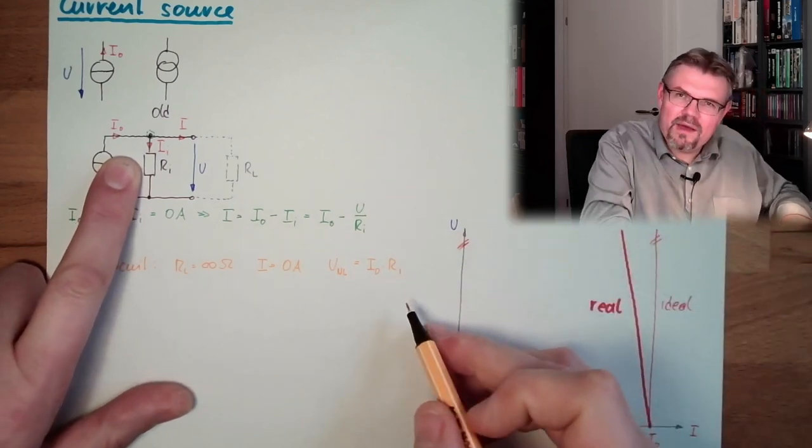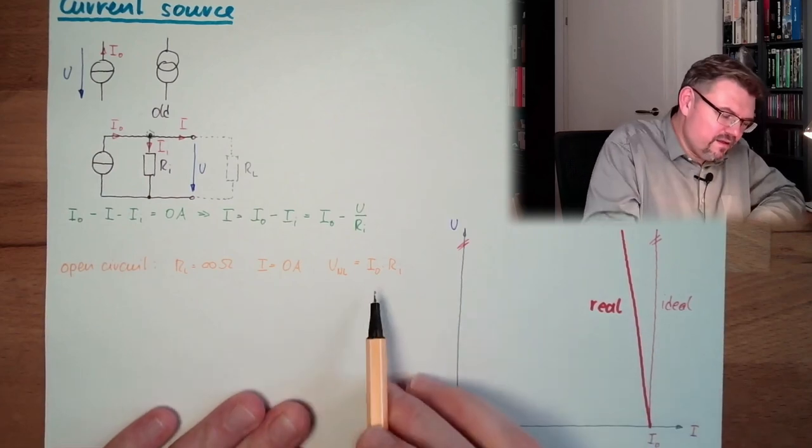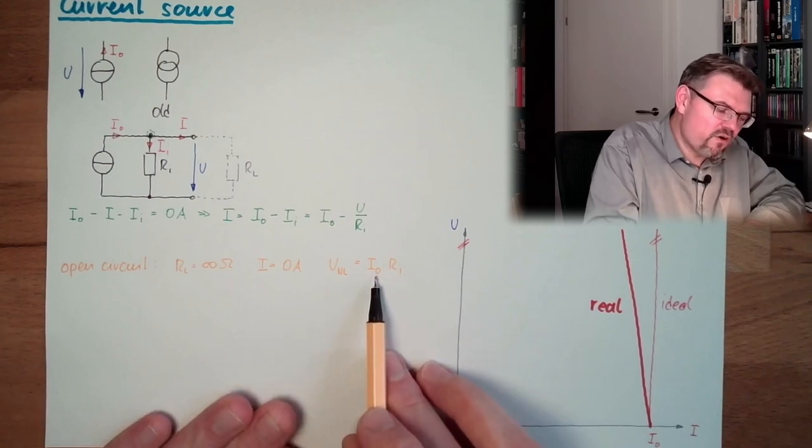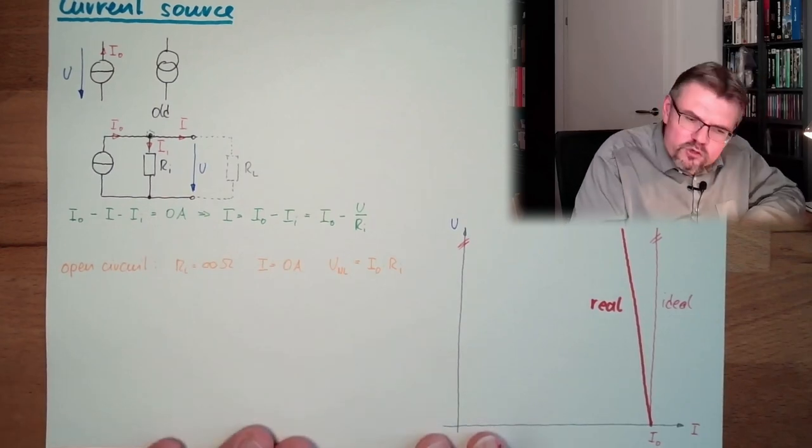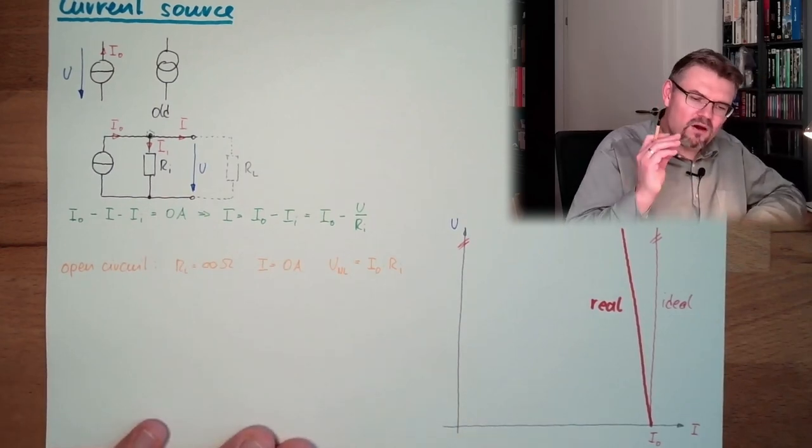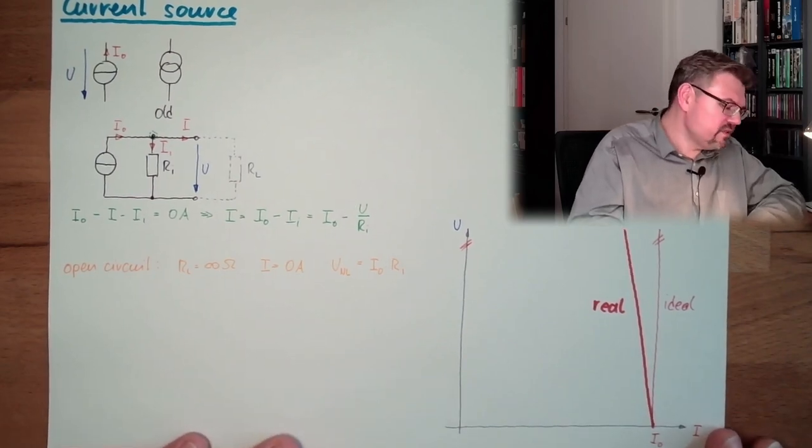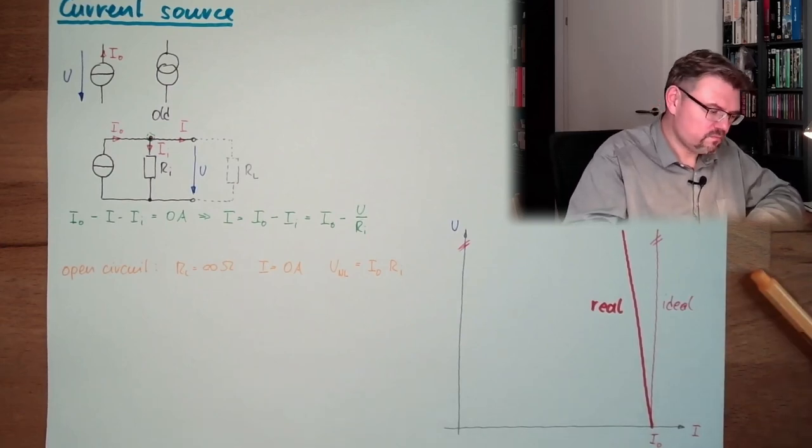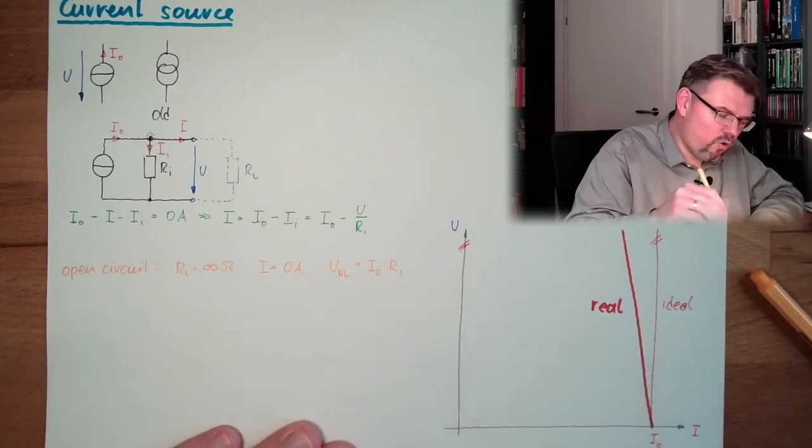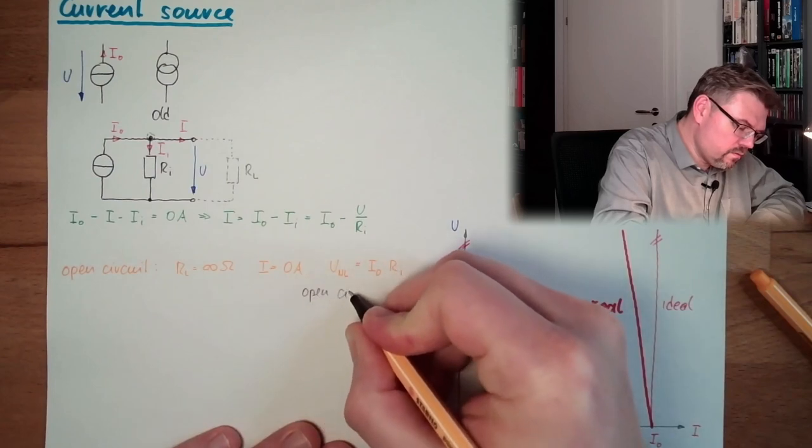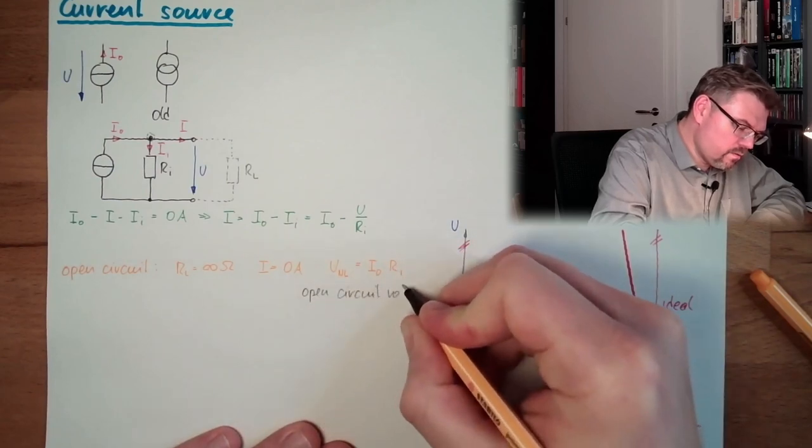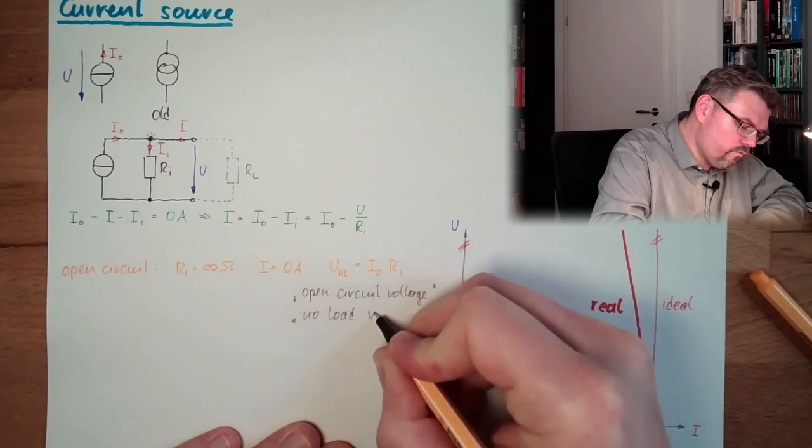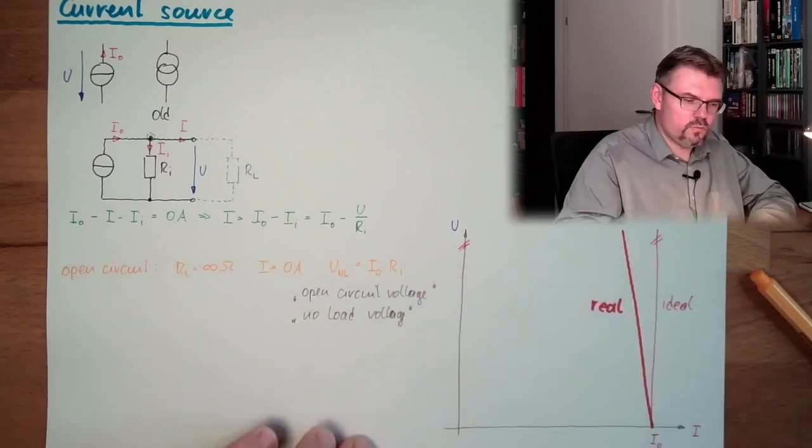If this is zero amps, all I0 must pass here. This means Ii will get to I0. So, this means our no-load voltage will be I0 multiplied by Ri. And since I said this Ri must be big to make it ideal. You see, even if small, if this is huge, even at small source currents, there will be huge no-load voltage, huge open circuit voltage. So, never leave a current source open. That's not good. This is again called open circuit voltage or no-load voltage. Open circuit.